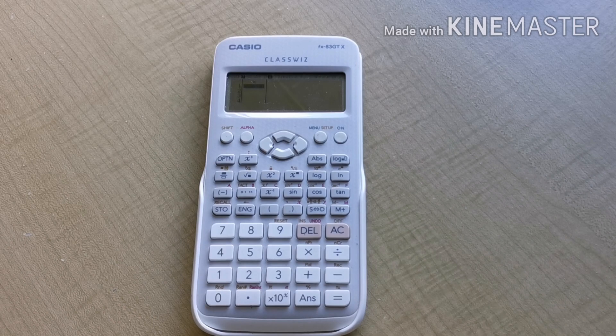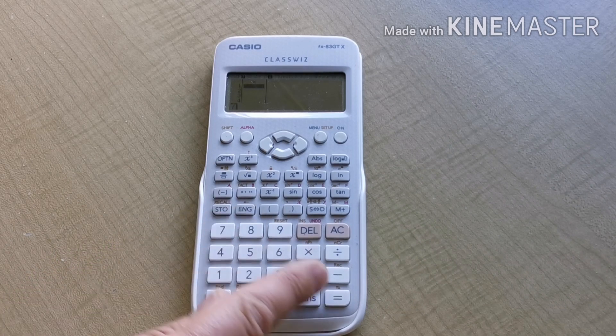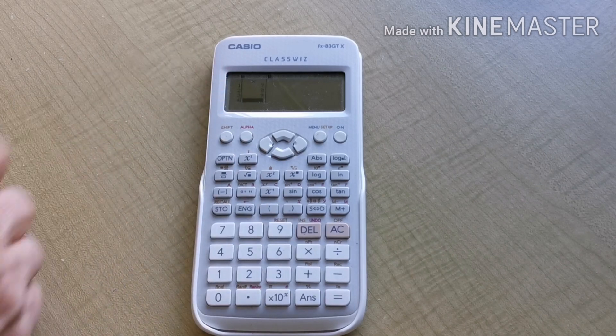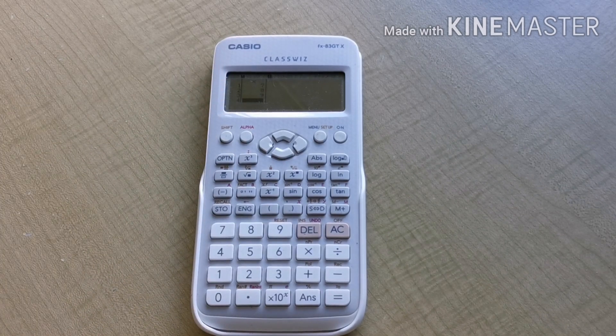Suppose our data are the numbers 7, 8, and 9. Press 7 equals, 8 equals, 9 equals. And we can see the numbers entering here on the screen.